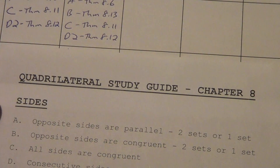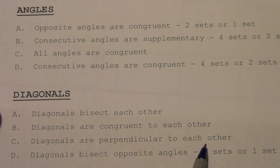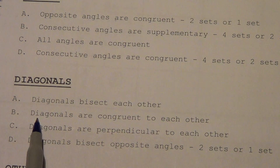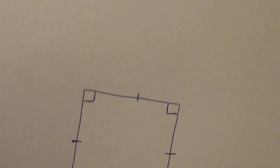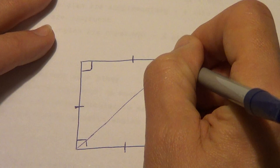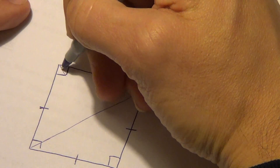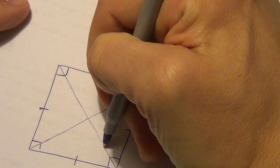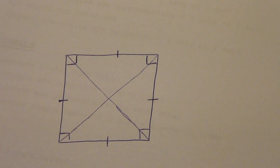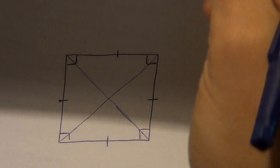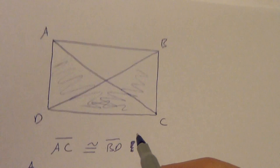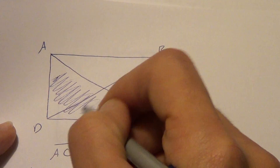Diagonals bisect each other — yep, any time we have a parallelogram the diagonals bisect each other. Diagonals are congruent to each other. Let's go to this picture and draw the diagonals in. Remember when we did a rectangle and proved that the diagonals were congruent to each other? I'm going to grab that earlier one from our earlier video.